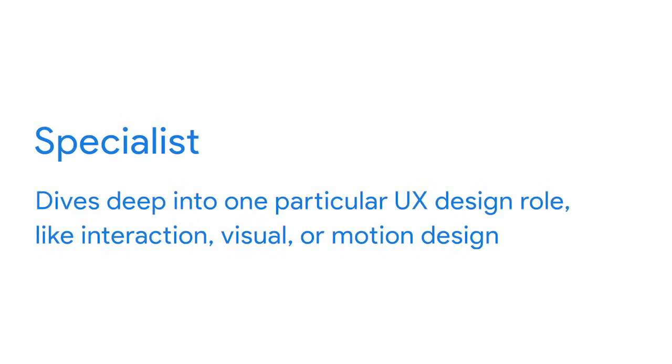On the other hand, if you become really interested in one part of UX design, you might find your niche as a specialist. A specialist dives deep into one particular UX design role, like interaction, visual, or motion design. While a generalist has a breadth of knowledge, a specialist has more depth of knowledge in one kind of UX design. Specialists usually work at large companies where the organization can afford a big team of UX designers. At Google, we have thousands of specialized UX designers.